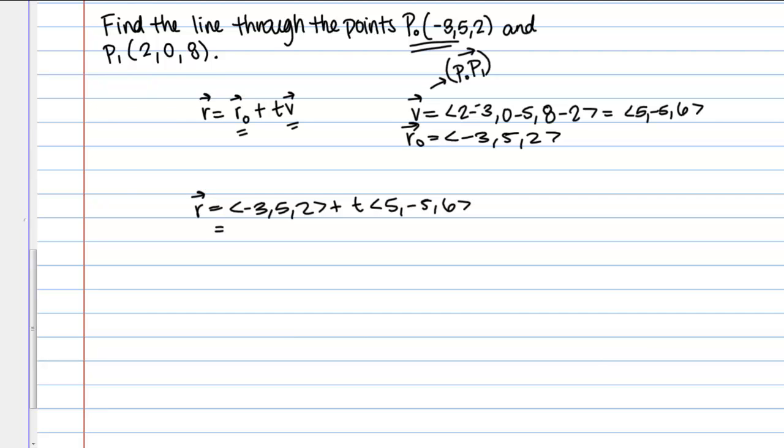If I actually go through and add these vectors, I'm going to get <-3+5T, 5-5T, 2+6T>. This gives me the equation of my line in space.